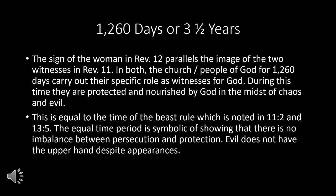We saw this time period — 1,260 days — in chapter 11. The sign of the woman in Revelation 12 parallels the image of the two witnesses in Revelation 11: in both, the church — the people of God — carries out their specific role as witnesses for God for 1,260 days, protected and nourished by God in the midst of chaos and evil. We talked in the previous lesson about 1,260 days as another way of saying three and a half years. This is equal to the time the beast rules — noted in chapter 11:2 and also chapter 13:5, though in those places it says 42 months. The equal time period is symbolic, showing there is no imbalance between persecution and protection. Evil does not have the upper hand, despite appearances.